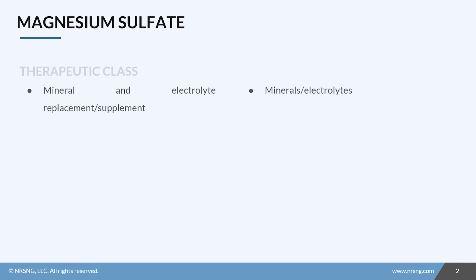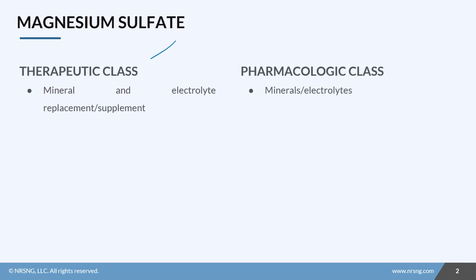Remember when we talk about the therapeutic class of a drug, we're talking about how it works in the body. For magnesium sulfate, the therapeutic class is a mineral and electrolyte replacement or supplement. For the pharmacologic class, or the chemical effect of the drug, magnesium sulfate is a mineral and electrolyte.